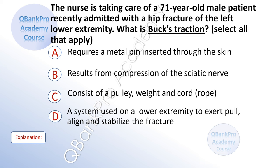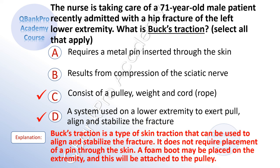The nurse is taking care of a 71-year-old male patient recently admitted with a hip fracture of the left lower extremity. What is Buck's traction? Select all that apply. A. Requires a metal pin inserted through the skin. B. Results from compression of the sciatic nerve. C. Consists of a pulley, weight, and cord. D. A system used on a lower extremity to exert pull, align, and stabilize the fracture. The correct answers are C and D. Buck's traction is a type of skin traction used to align and stabilize the fracture. It does not require placement of a pin through the skin. A foam boot may be placed on the extremity and attached to the pulley.